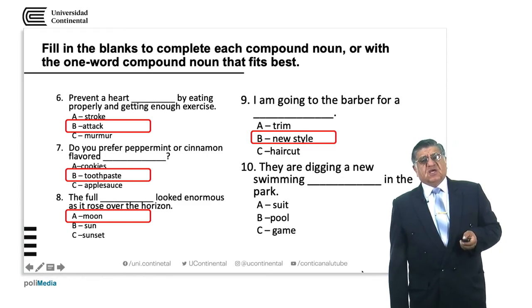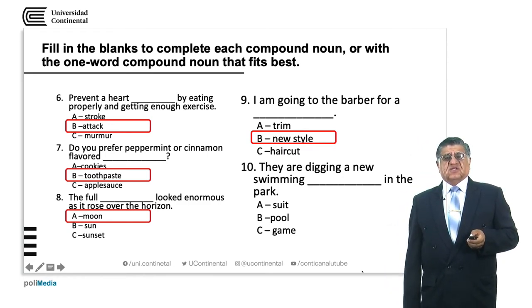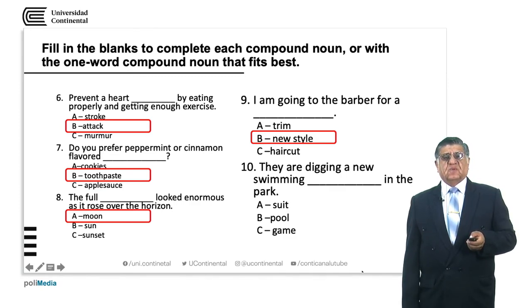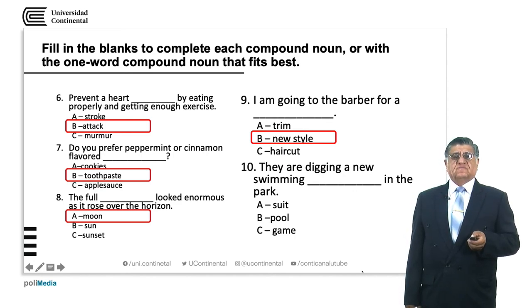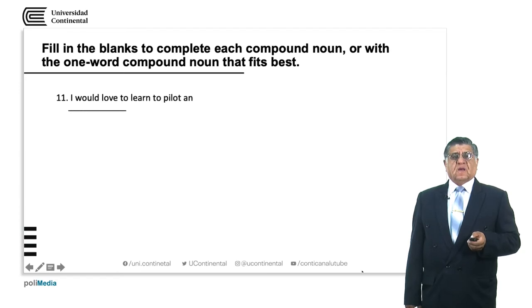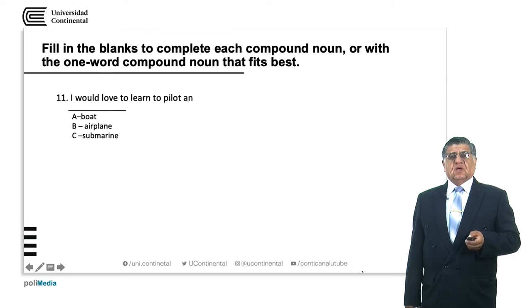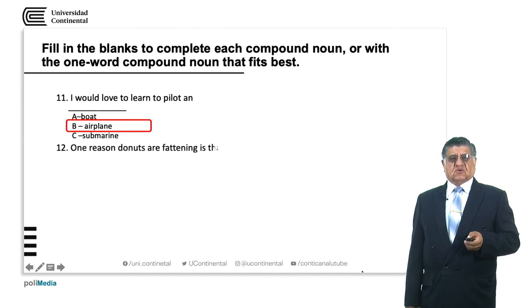Exercise: 'They are digging a new swimming ___.' The answer is swimming pool. More exercises: 'I would love to learn to pilot ____.' To pilot is very specific — pilot is just for flying devices, so we pilot airplanes, not boats or submarines.